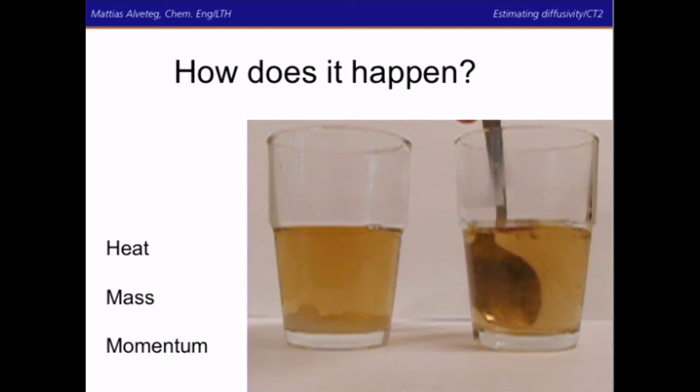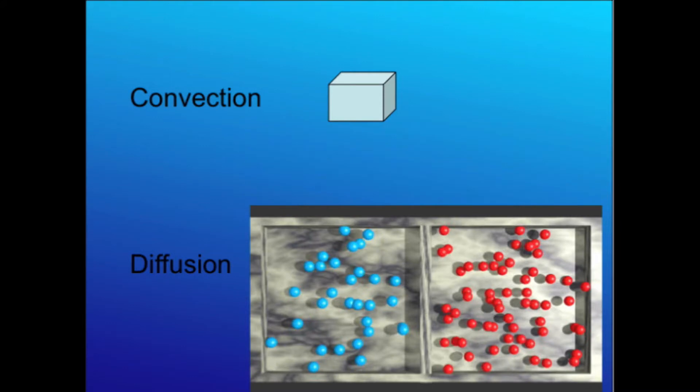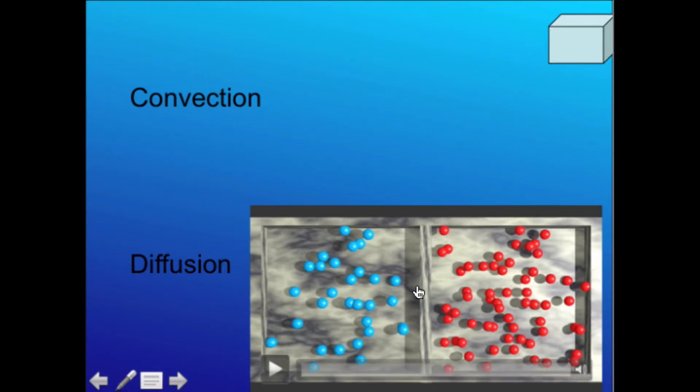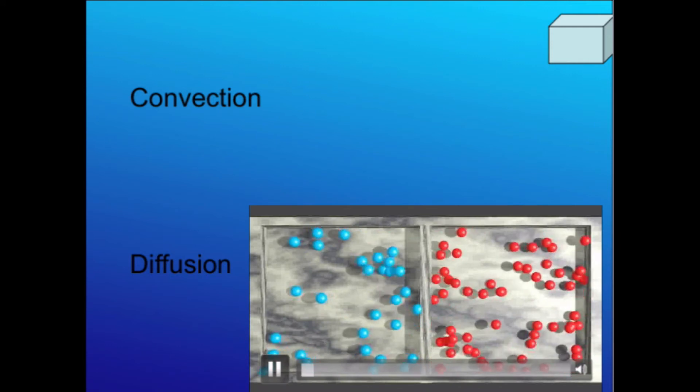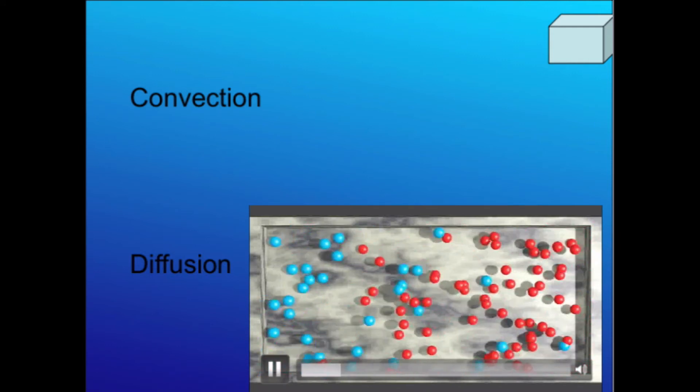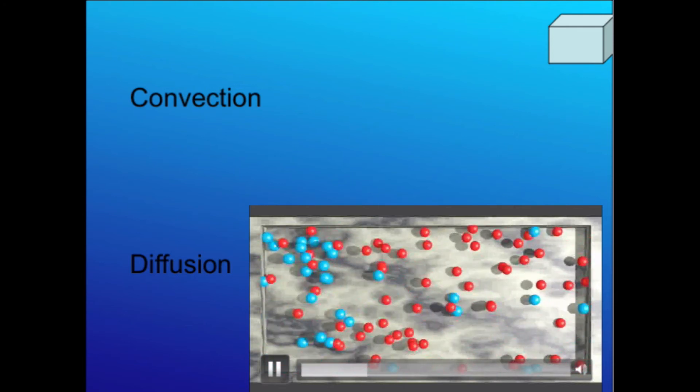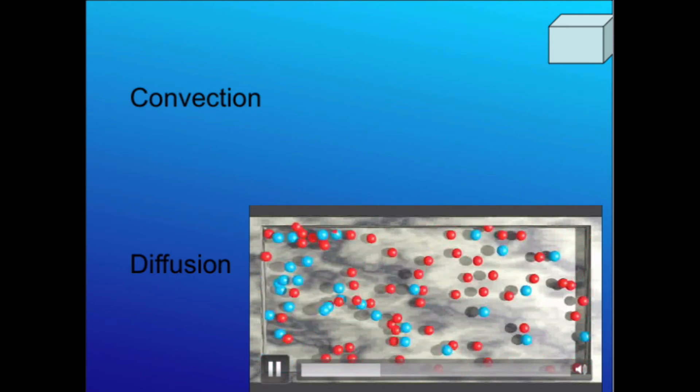To simplify, we divide the movements into convection and diffusion. Convection is when an entire package of liquid moves from one place to another, while diffusion is due to the random movement, the Brownian motion of the molecules. So, the molecules move and they collide and they change direction and therefore they mix as they move randomly about.